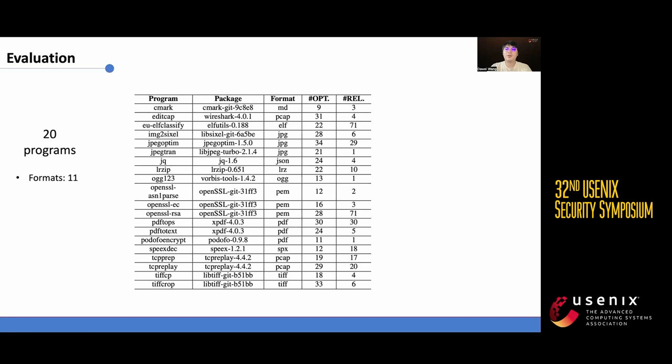We evaluated the effectiveness of Copy the Fuzz on 20 popular open-source programs. These programs handle 11 different types of input files, including image, certificate, text, traffic packet, executable file, archive, audio, and document.